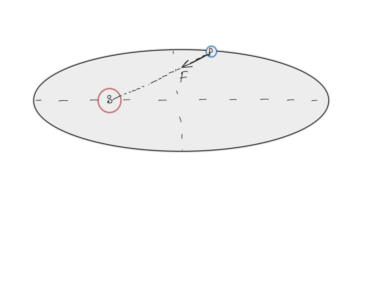Now, will we be able to conserve linear momentum? We cannot conserve linear momentum because linear momentum is conserved only if net force is equal to zero. Here, the net force acting on this planet is not equal to zero, so linear momentum is not a constant — we cannot conserve it.